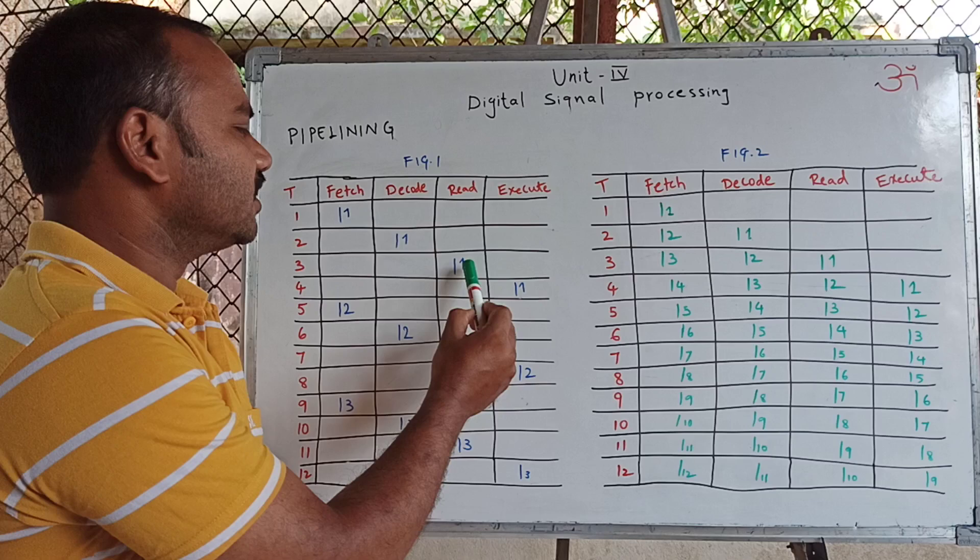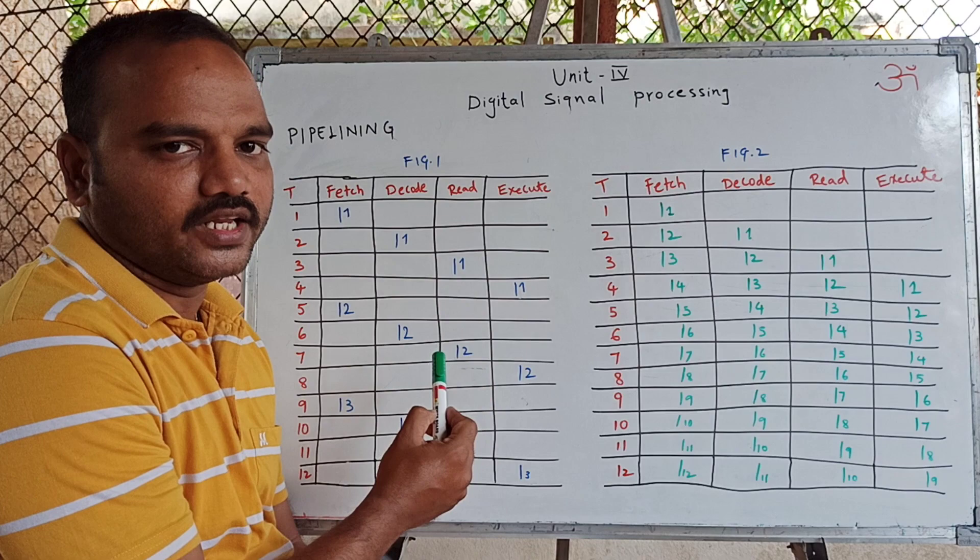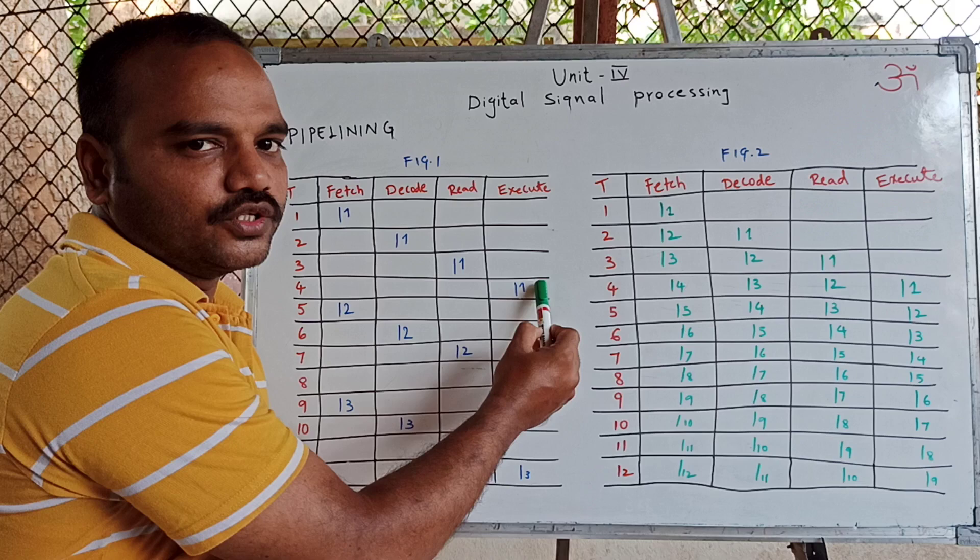In the third clock pulse, instruction L1 enters the read phase. In the fourth clock pulse, instruction L1 enters the execute phase. During this time, fetch, decode, and read are idle. After four clock pulses, only instruction L1 is executed.